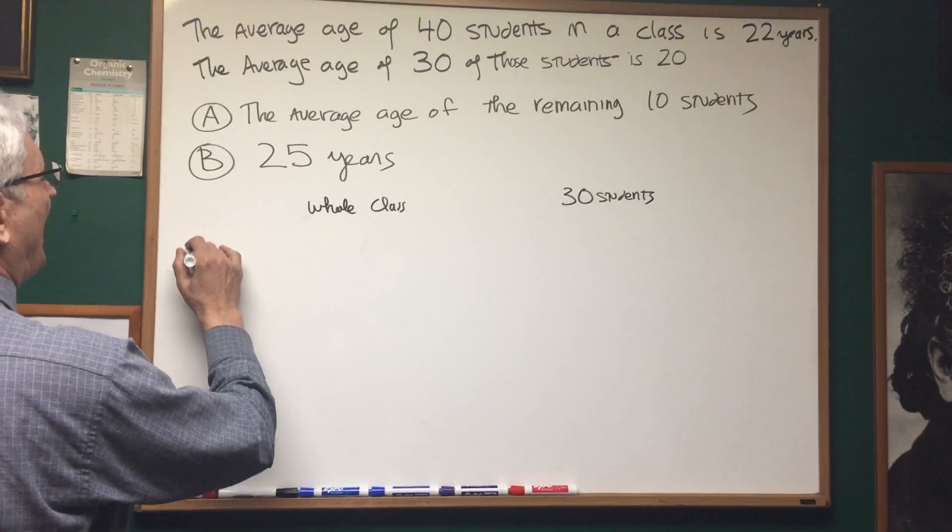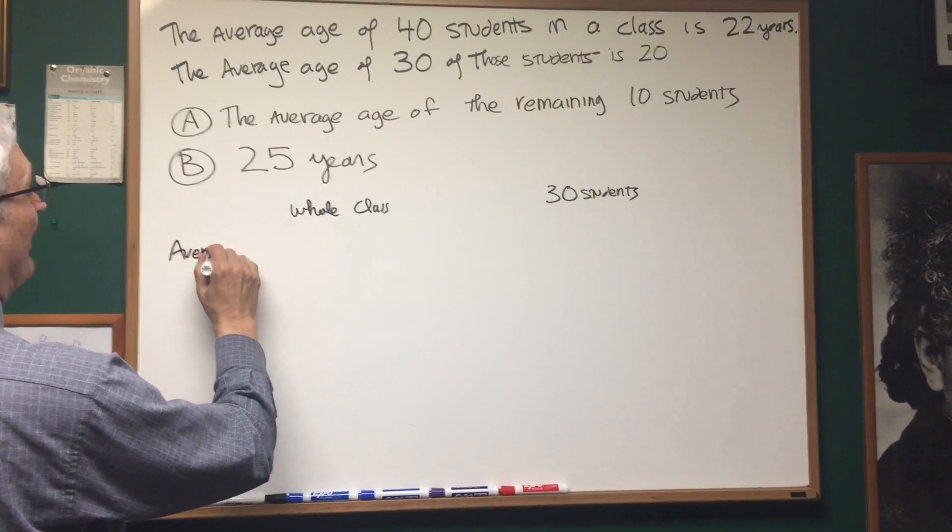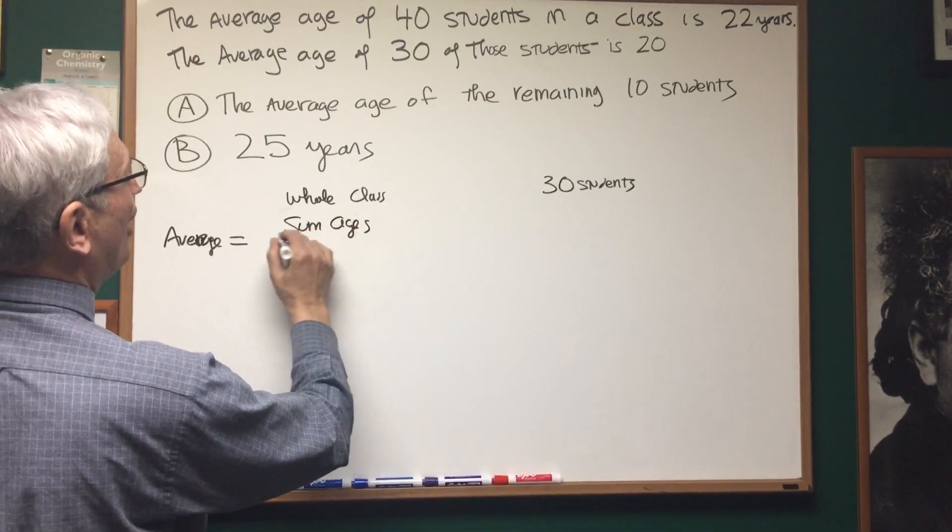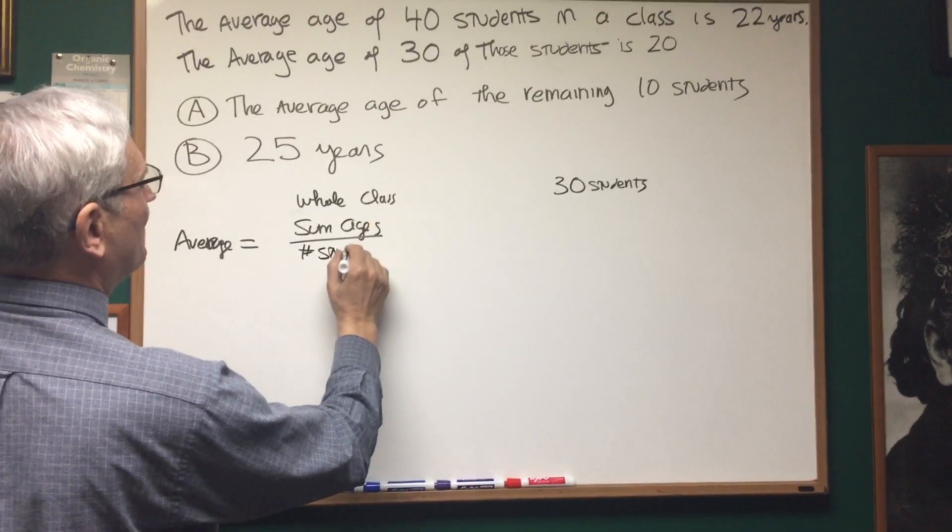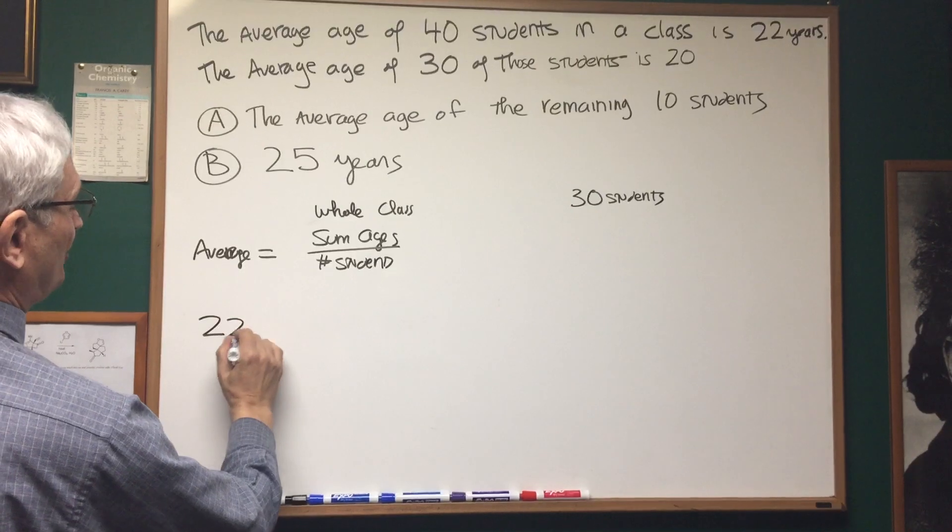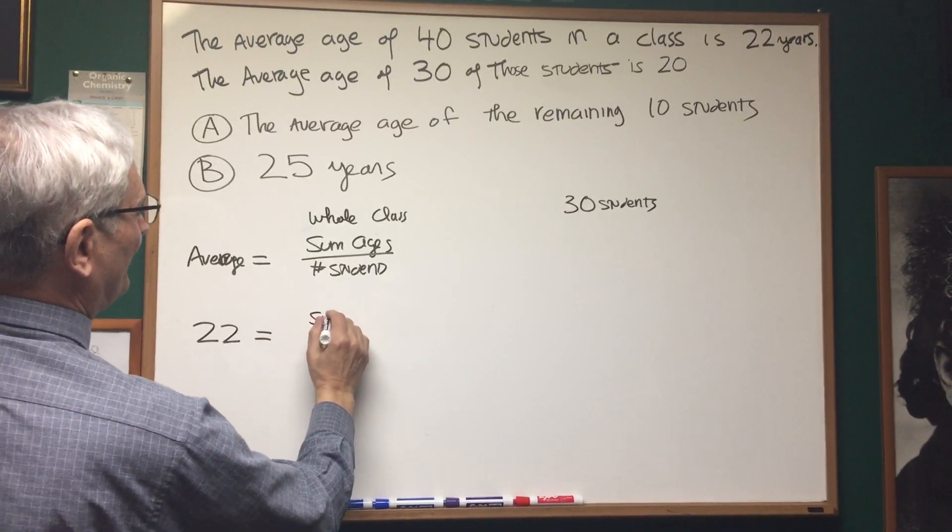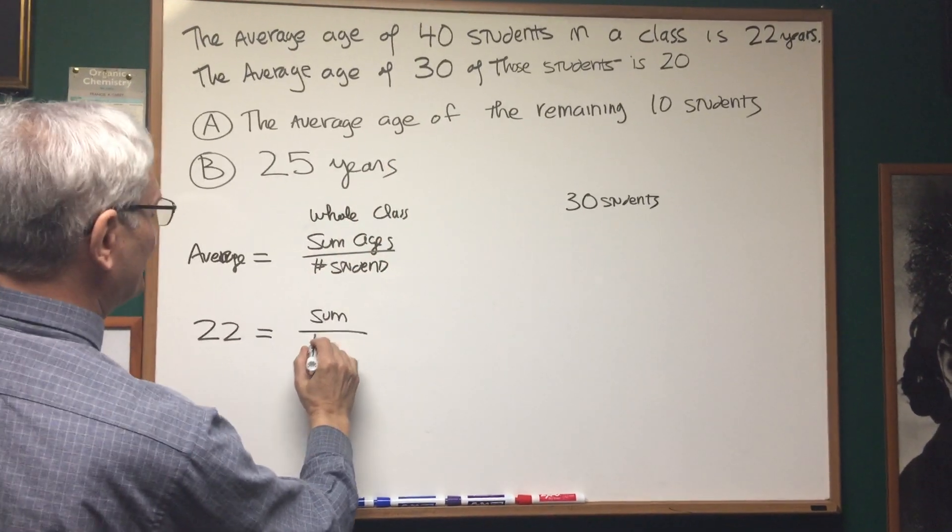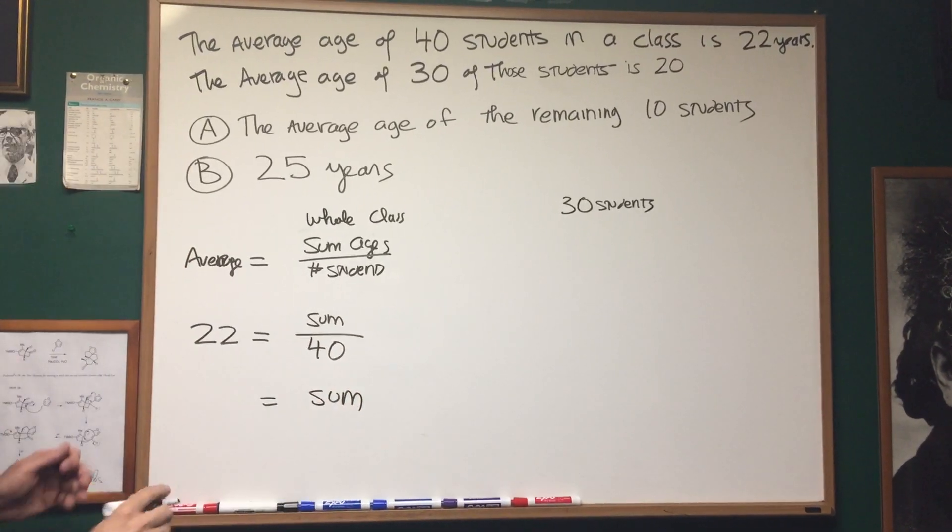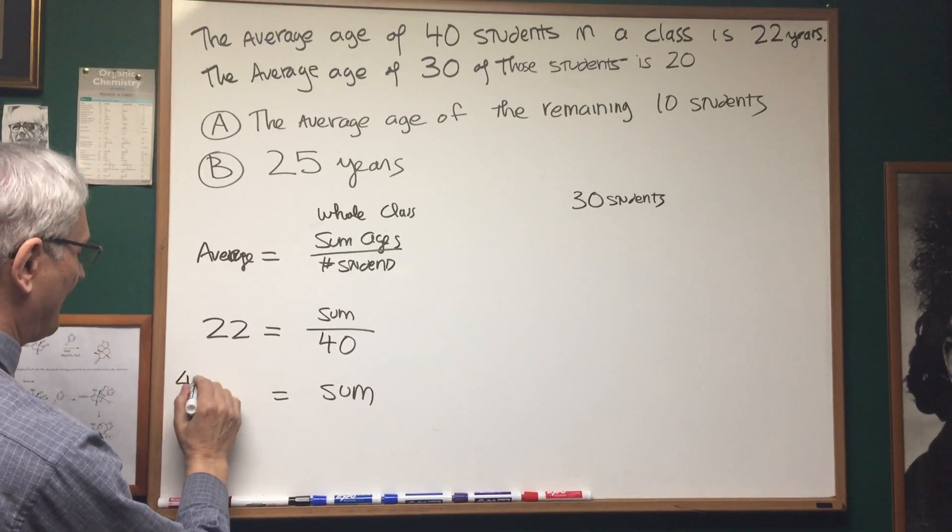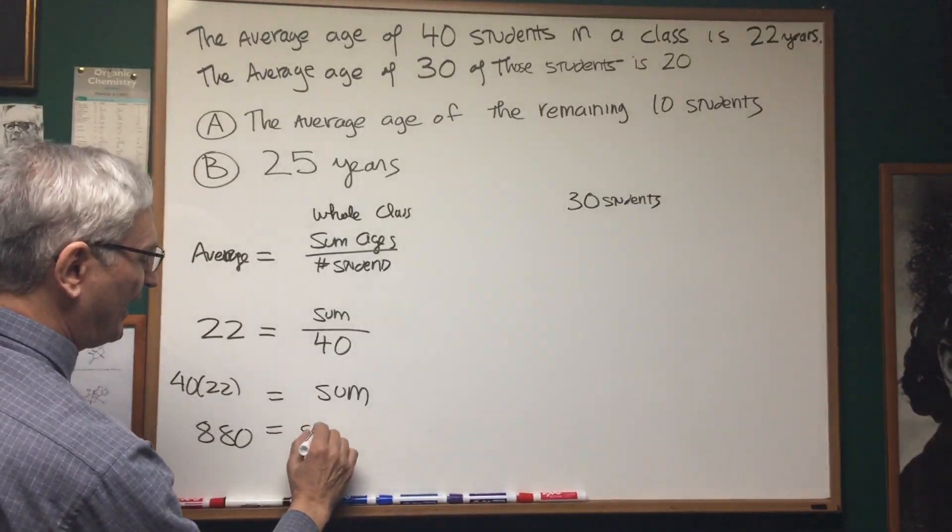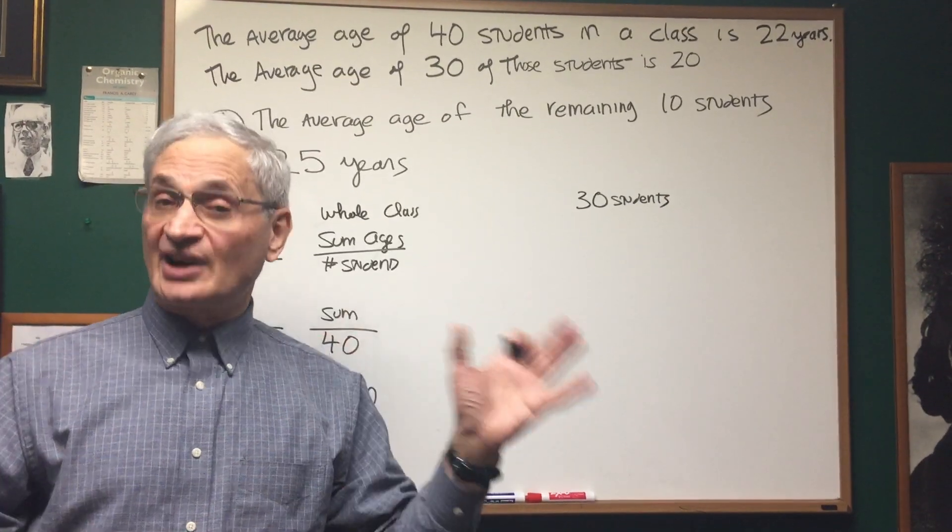What is average? How do we compute the average age or any kind of average? It's going to be the sum of the values, in this case the sum of the ages, over the number of students. So we know that the average age of the entire class is 22 years. We know the number of students is 40. From this it's very simple to compute that the sum of the ages of the entire class is 40 times 22, or 880.